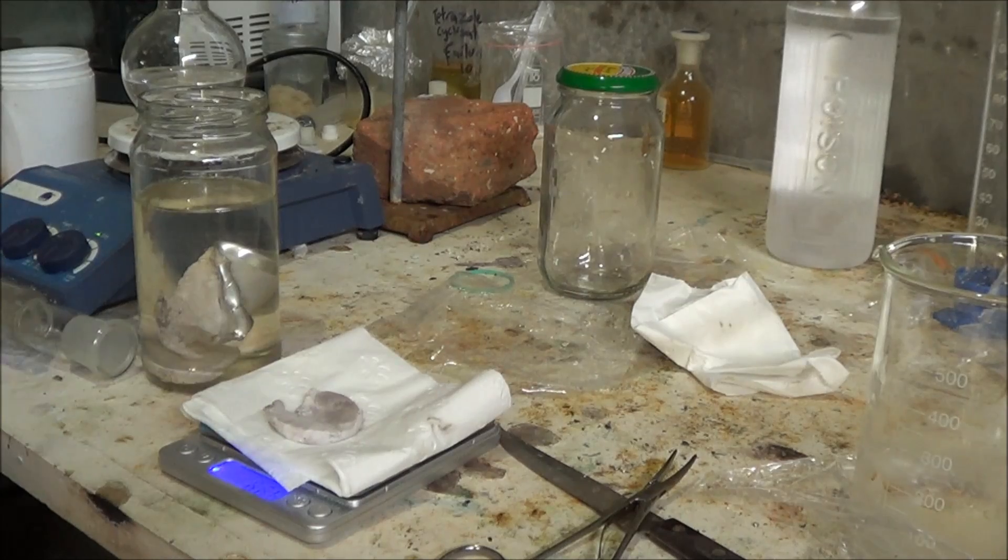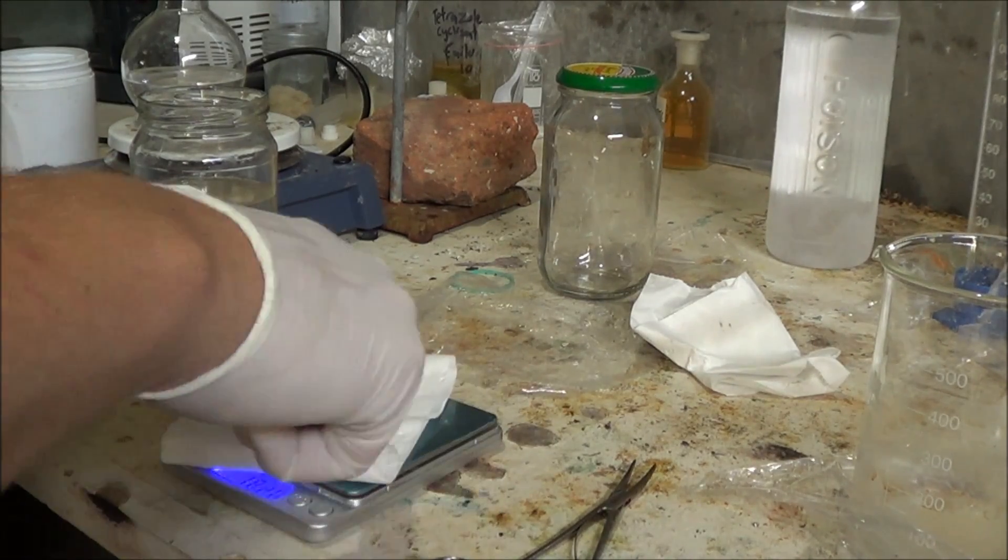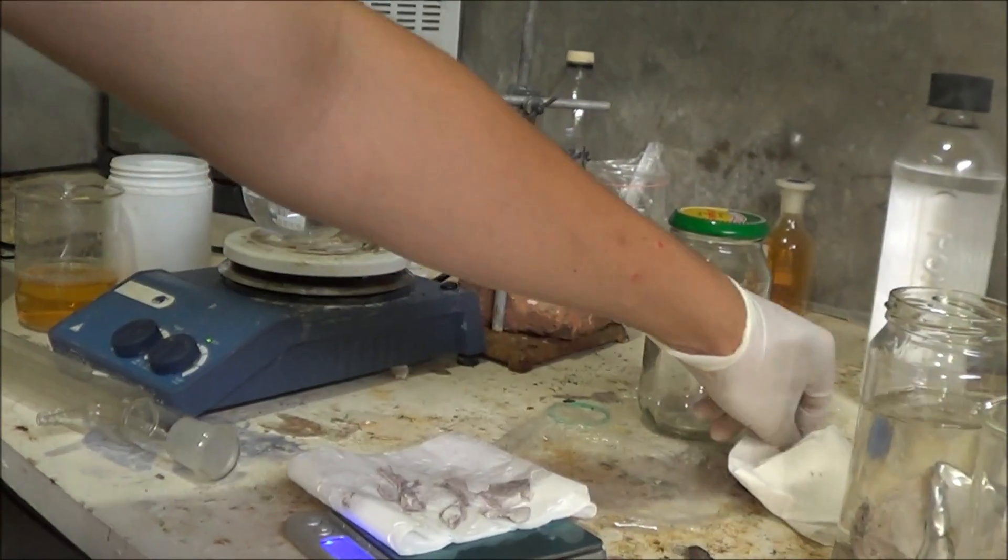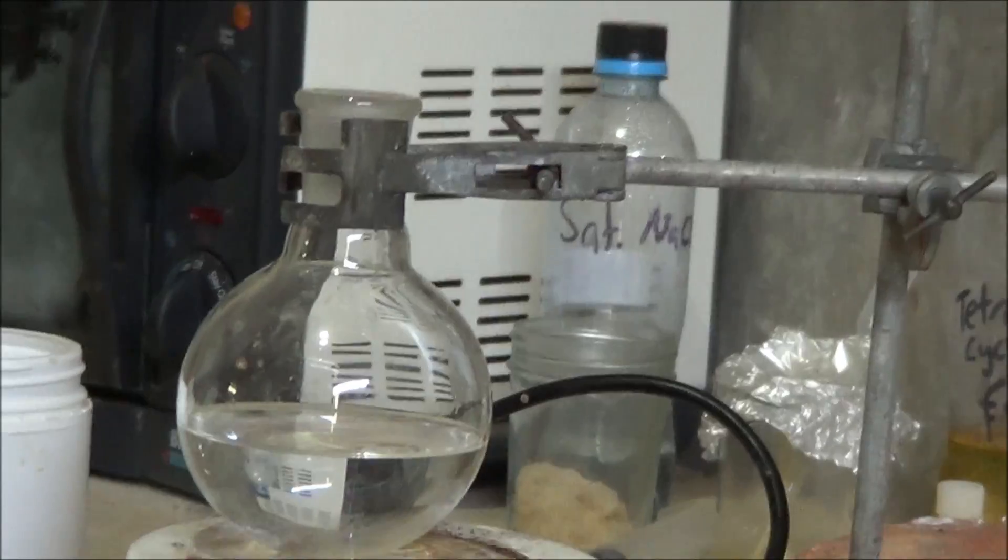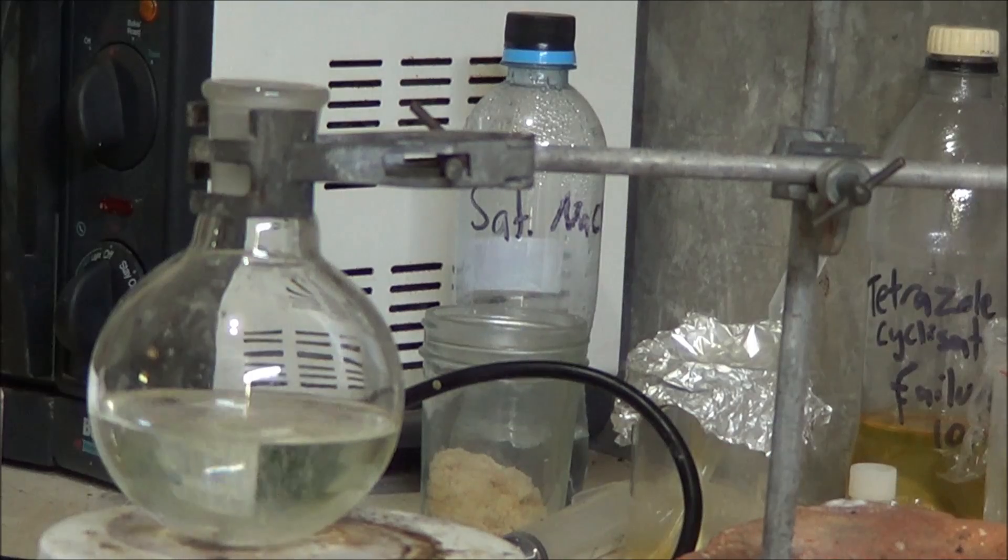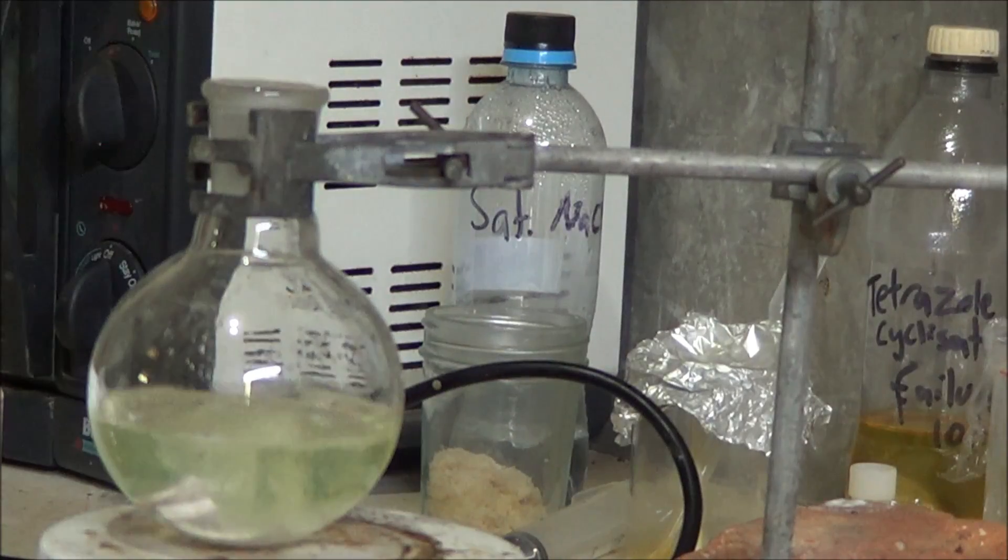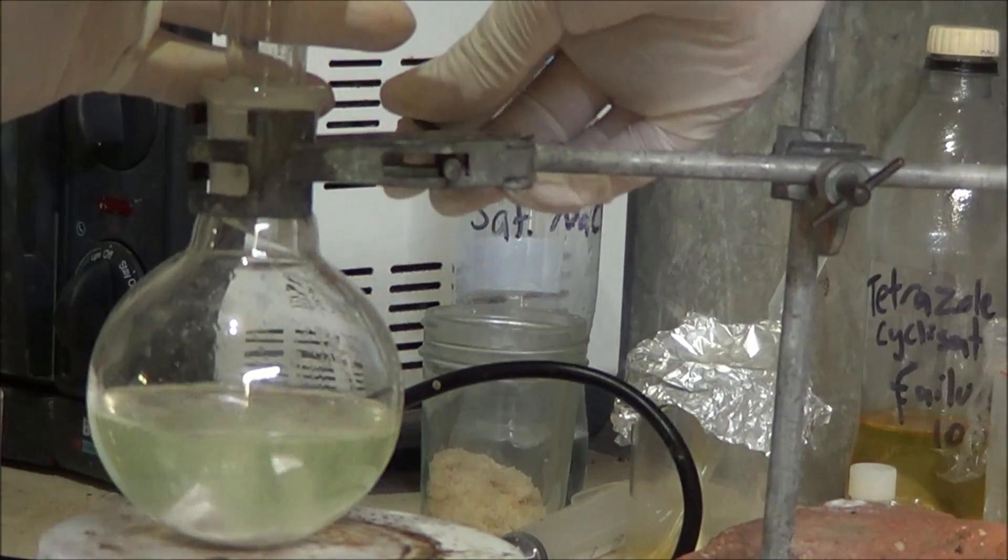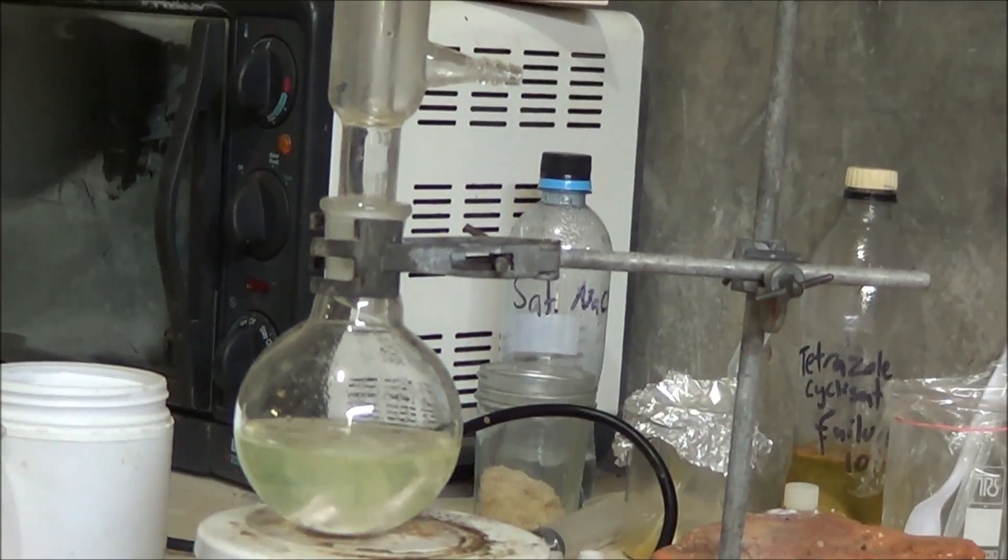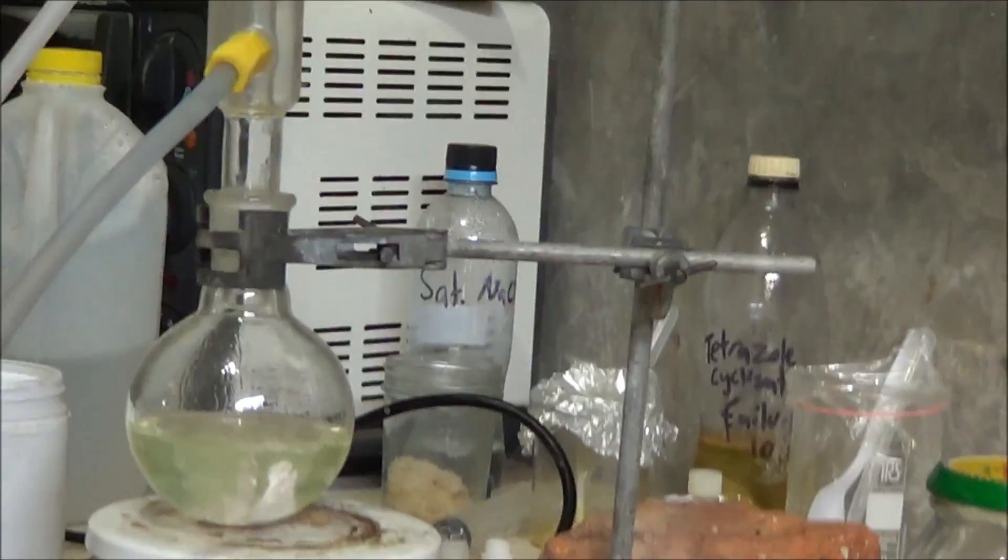This piece of sodium is 4.8 grams so we're just going to cover this up. Alright now we get to chuck in the ethanol. Put it back on. Put it back pretty fast here. Put it on. And then we'll hook up the water to the condenser, and yeah, alright.